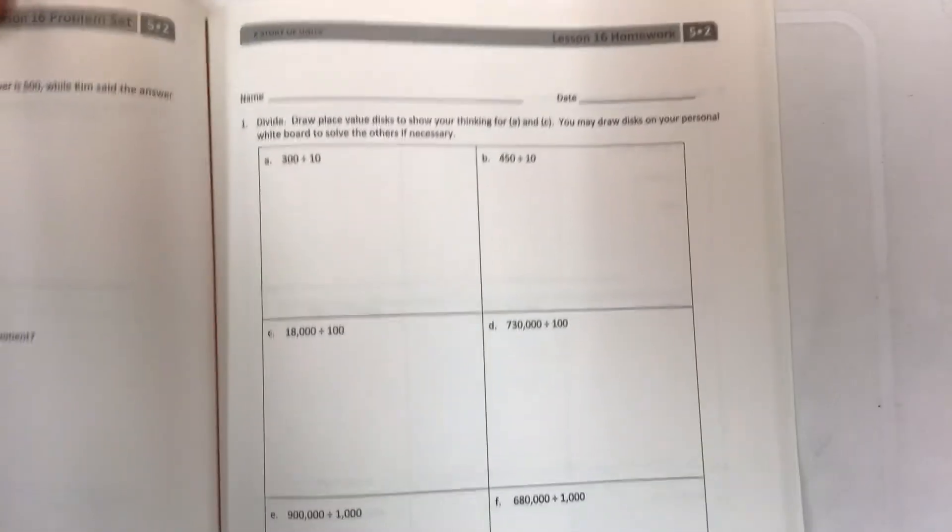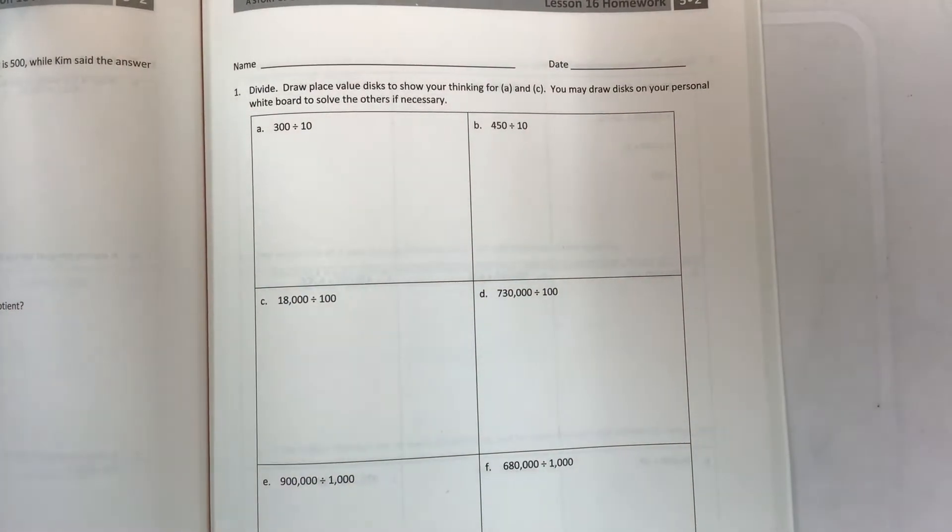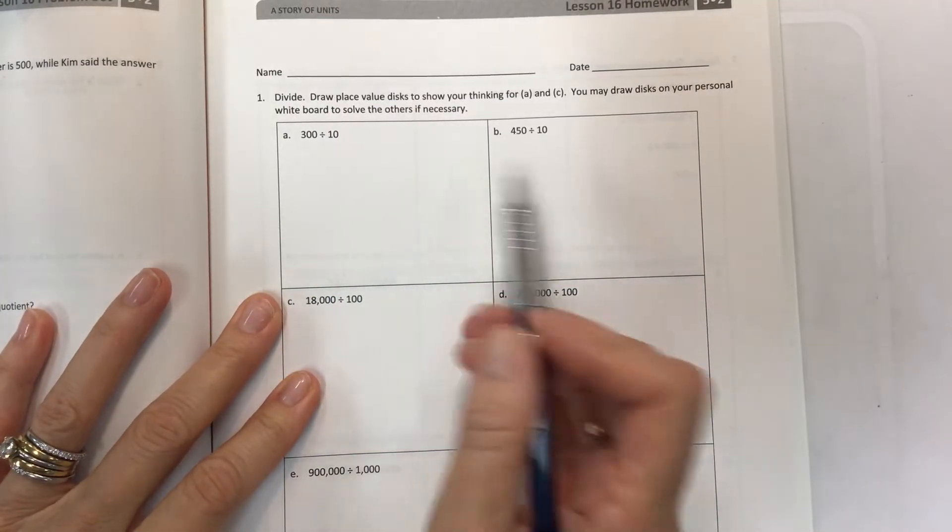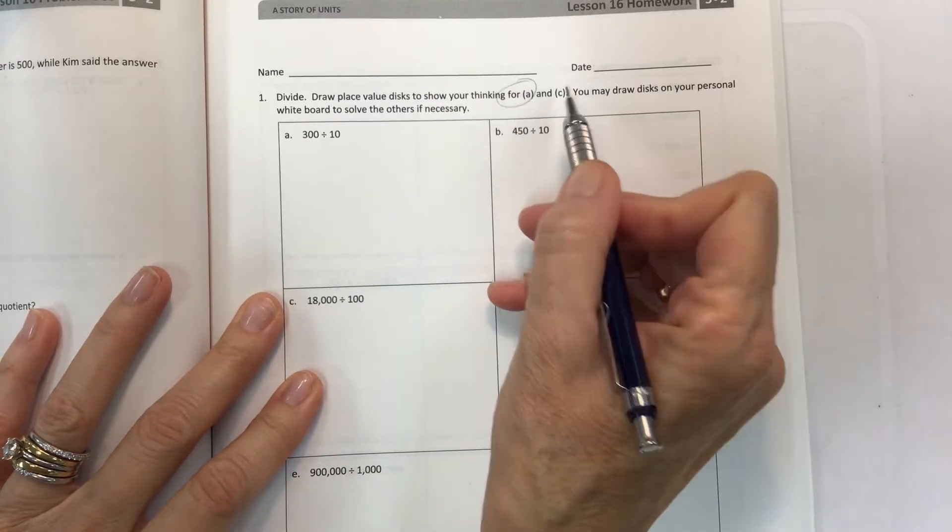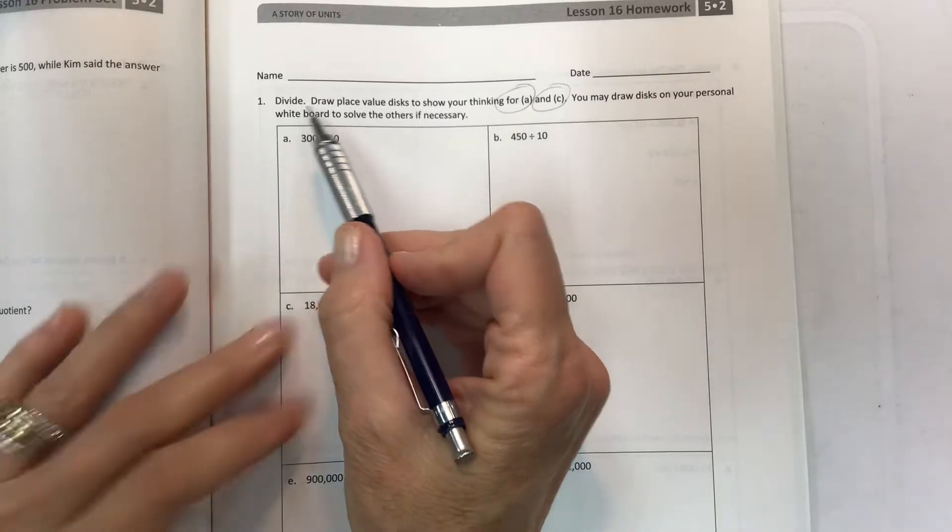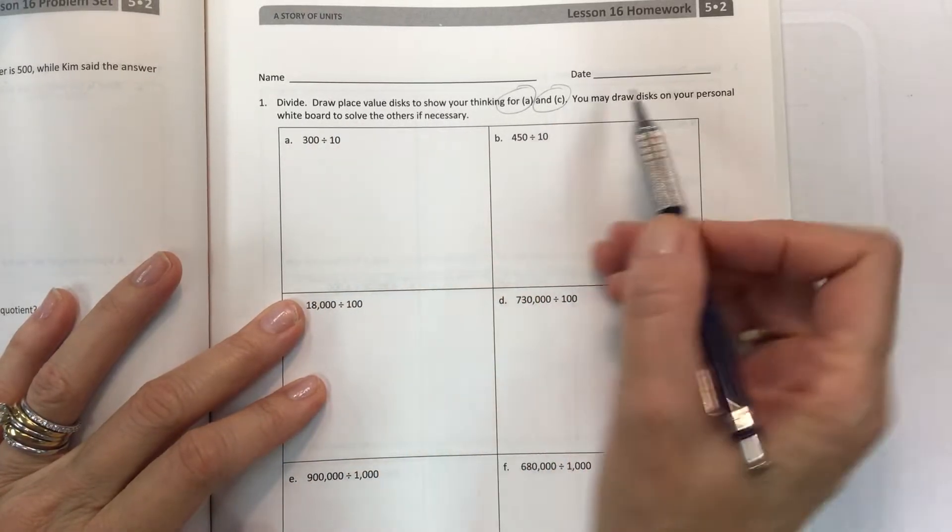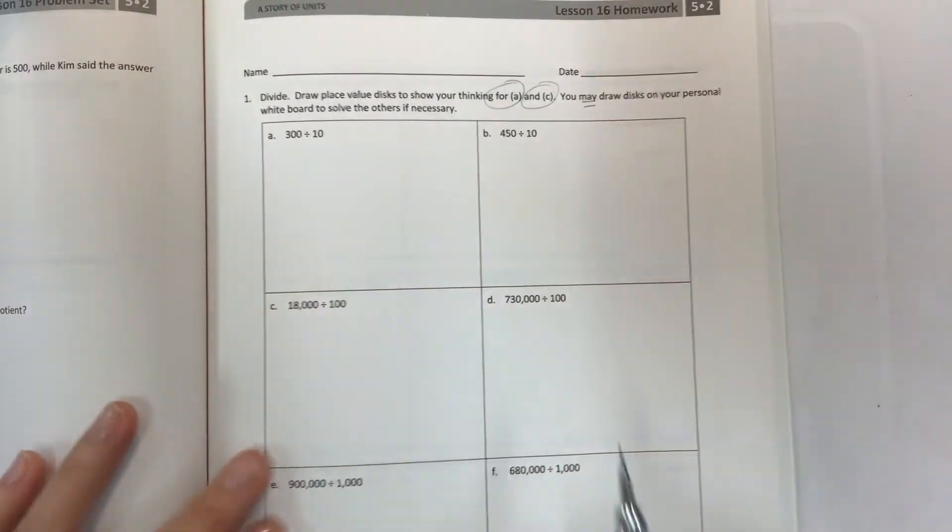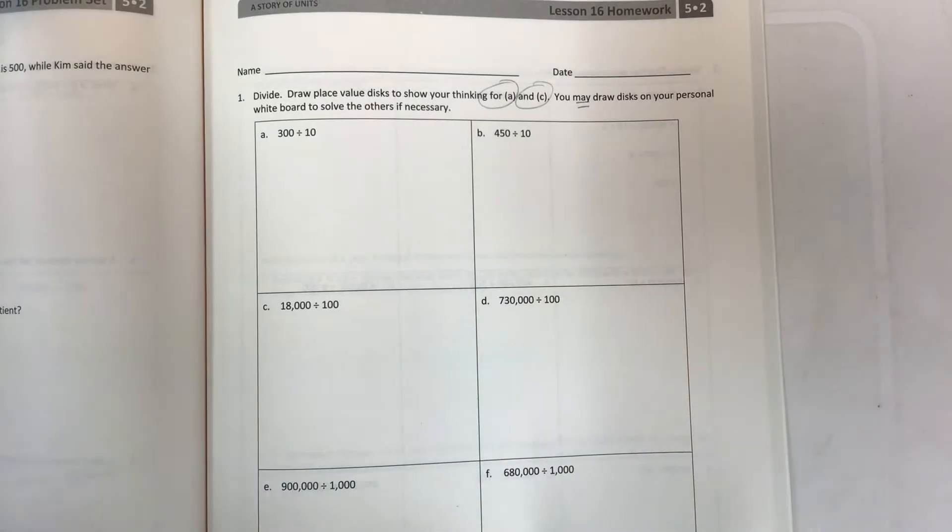With these crazy place value discs that nobody ever uses in adult life, you really should understand them so you can do it correctly for the few that we have to use them for today. Anyway, the directions say divide, draw place value discs to show your thinking for A and C only. You may draw the discs on your personal whiteboard to solve the others if necessary.